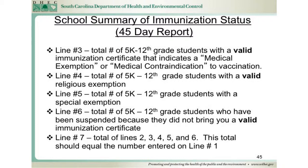On line number 4, enter the total number of 5K through 12th grade students with a valid religious exemption. To be valid, the DHEC 1126 or South Carolina Certificate of Religious Exemption must include: 1, the name and date of birth of the student; 2, the signature and printed name of the parent, guardian, or person in loco parentis; and 3, the date and signature of the notary public.